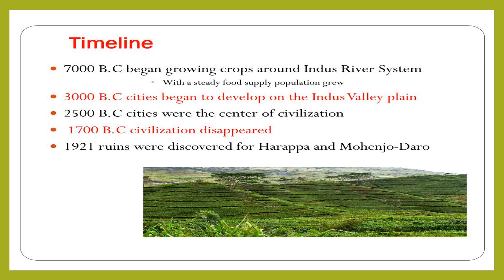Before we study the civilization in detail, let's check the timeline. It is said that in 7000 BC, many groups poured into the northern part of the subcontinent in order to settle down. There may be many reasons for their settlement — there would be food supply, plenty of water, and plenty of minerals for them to survive. In 3000 BC, many cities began to develop on the Indus Valley plain.